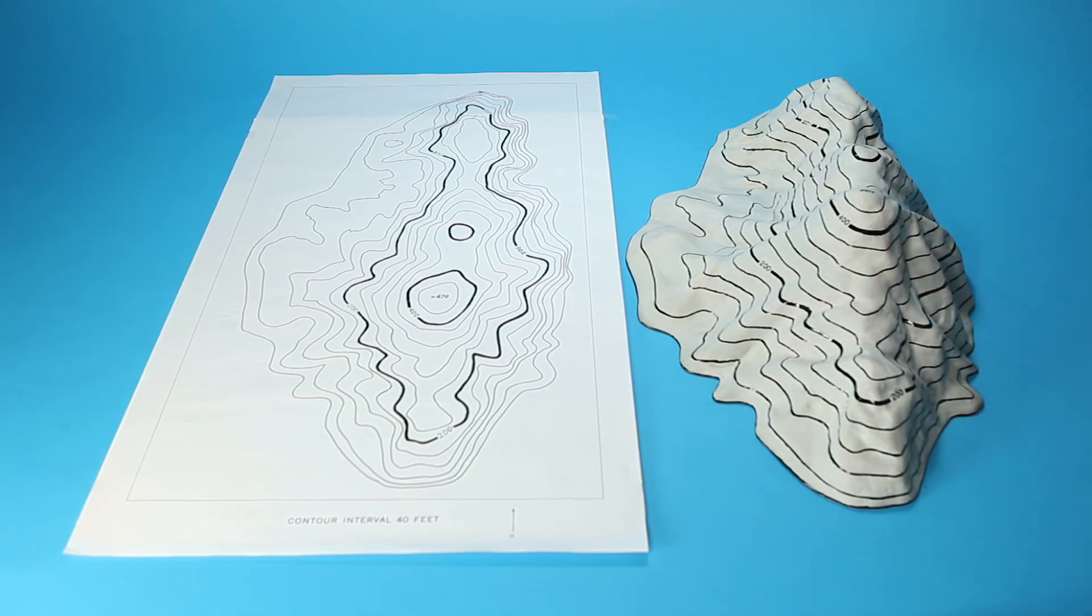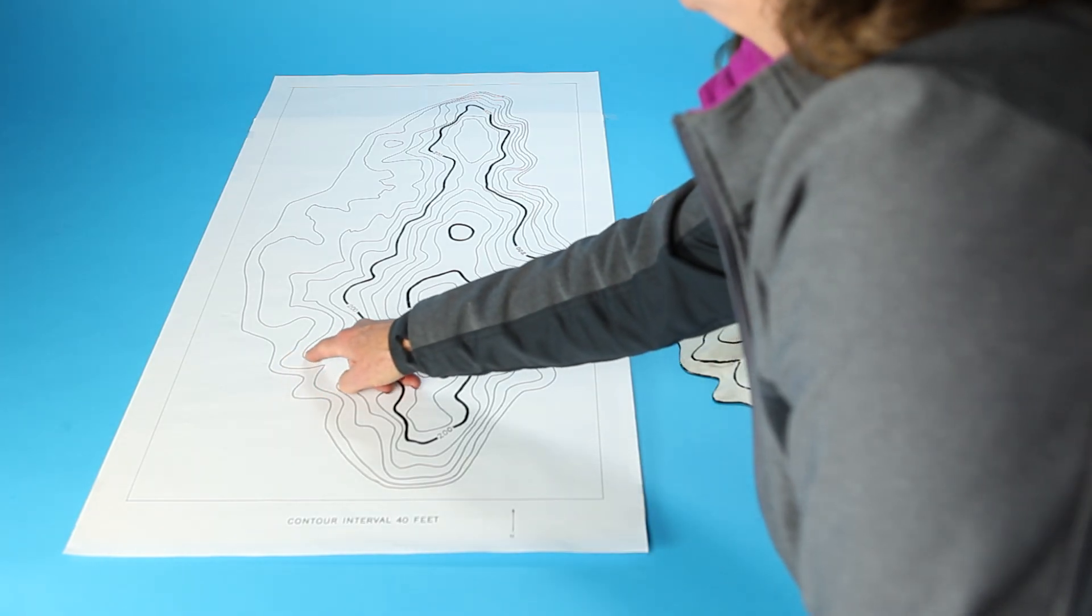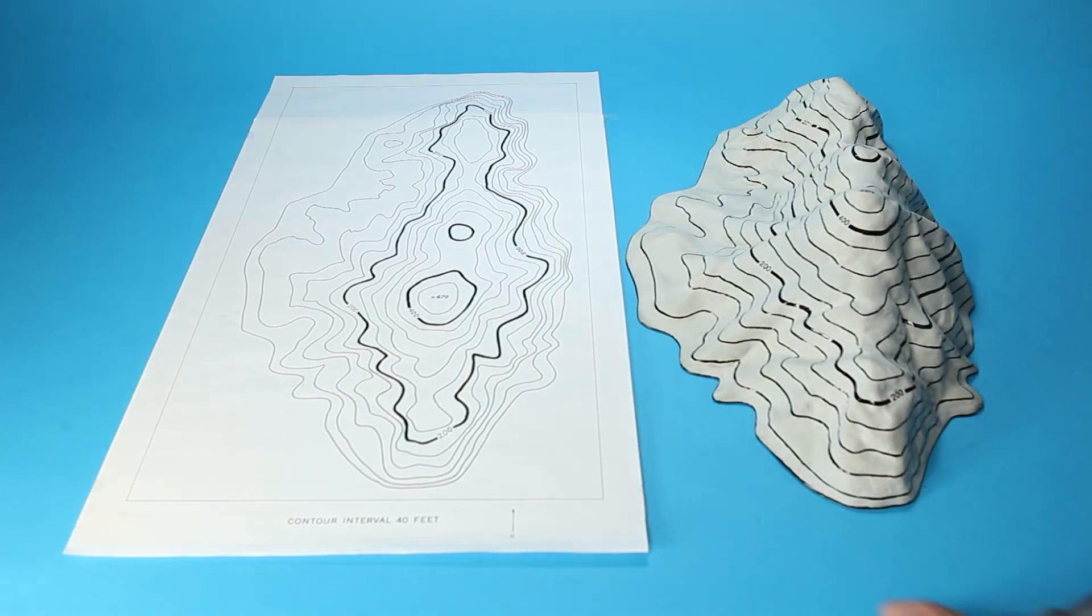The 40 foot difference in height between the lines is called the contour interval. And it'll be shown on your map.